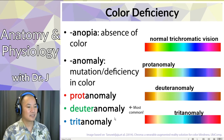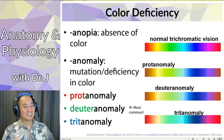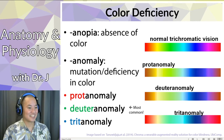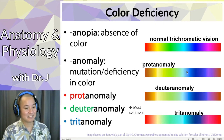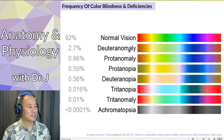Deuteranomaly is the most common type of color deficiency. So if you know someone who is colorblind, they probably have deuteranomaly or deuteranopia. I have a friend with red-green color blindness — it's kind of scary because he actually can't tell the difference between the red light and the green traffic light. He goes by context and the location of the lights — he just knows where all the lights are.